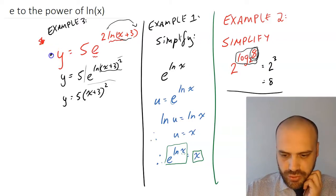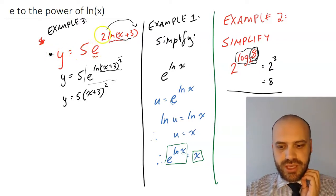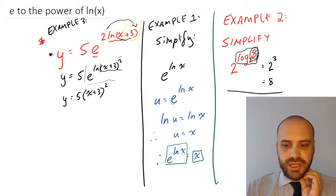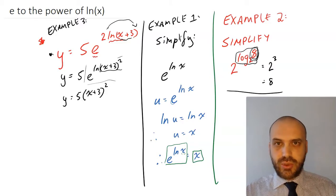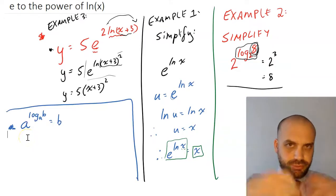And this horrible thing, y equals 5e to the 2 ln x plus 3, just becomes 5 times x plus 3 squared.